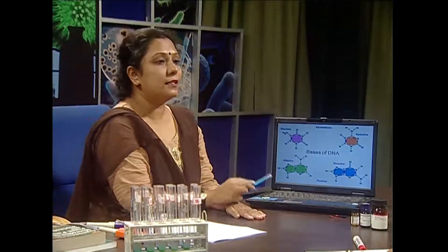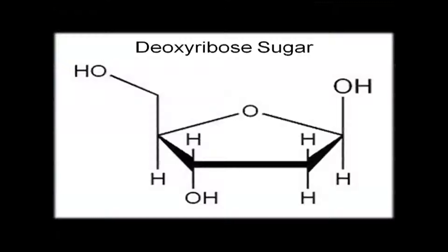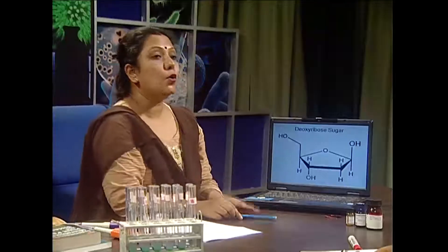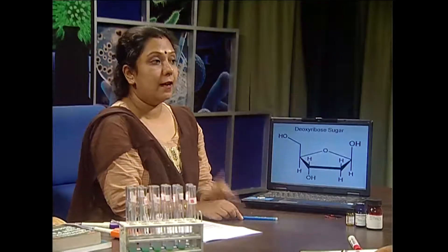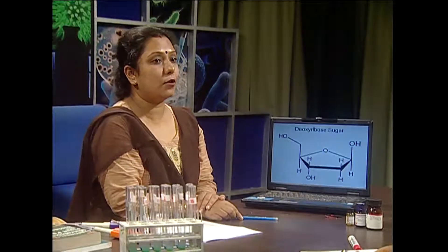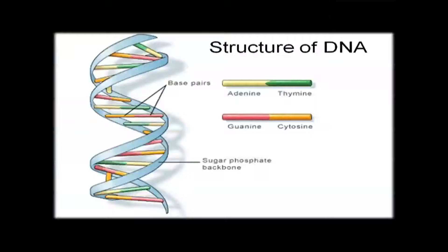These are the bases of DNA. This is the structure of 2-deoxyribose sugar, because at the 2' position no hydroxyl group is present. But in case of ribose sugar in RNA, the presence of hydroxyl group can be found. This is the general structure of double helical DNA according to the Watson-Crick model, where you can find the stacked bases as well as the double helical structure.